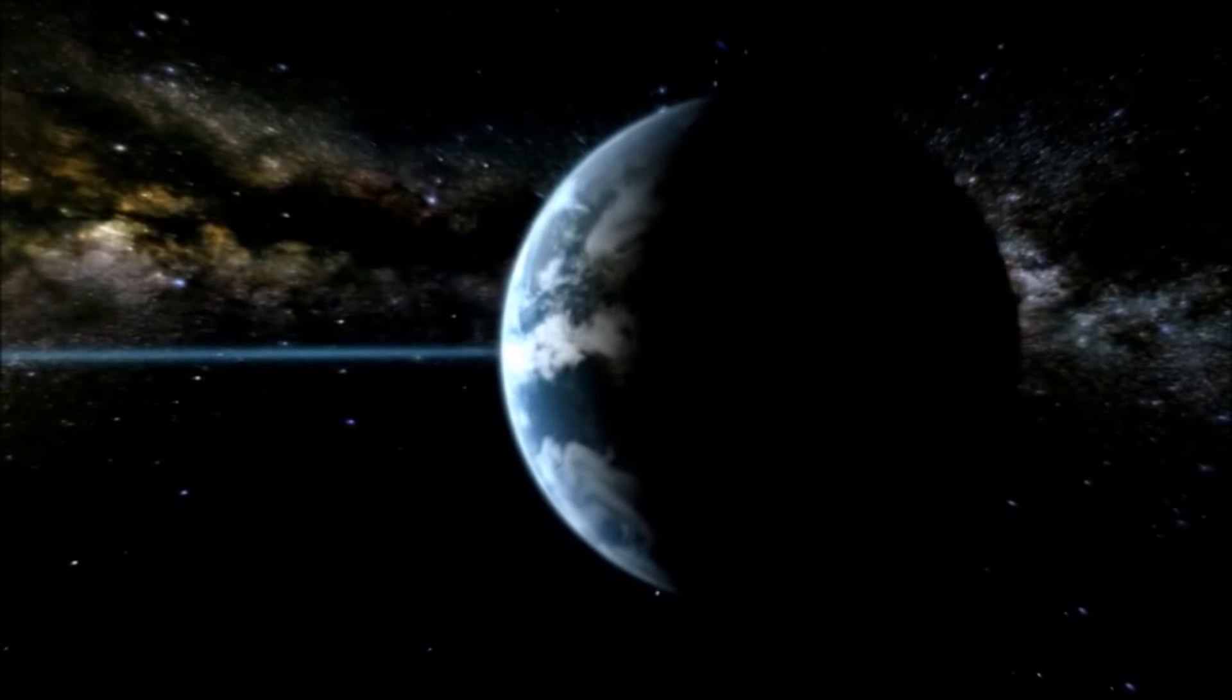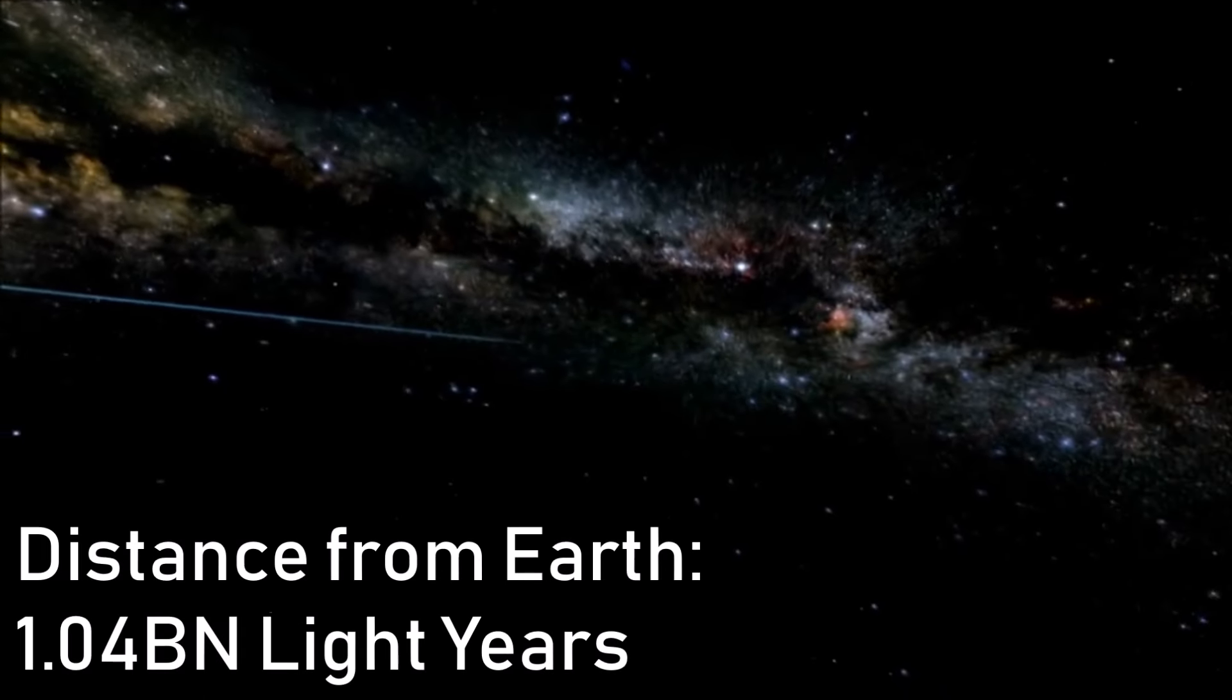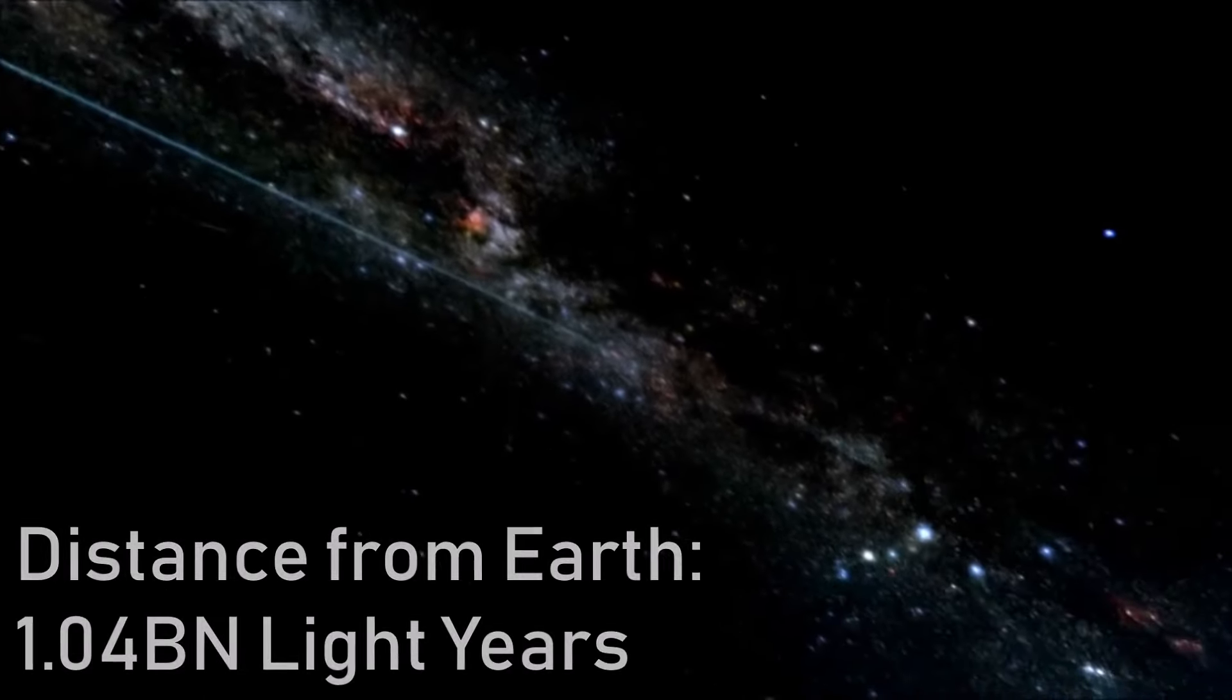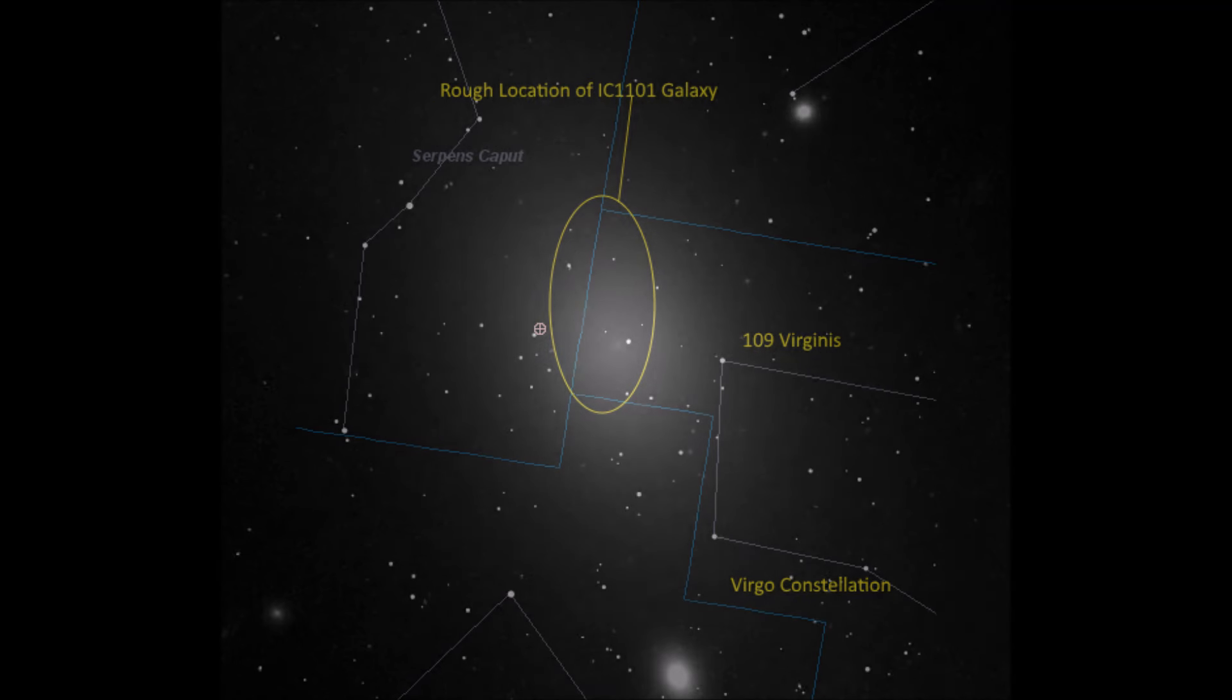The largest galaxy ever discovered sits at a distant 1.04 billion light-years from the Earth, in the constellation of Virgo primarily, but it overlaps into other constellations.